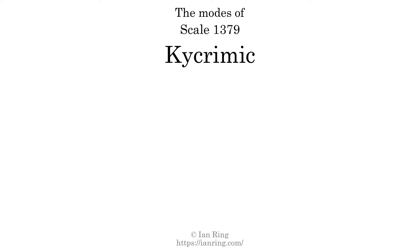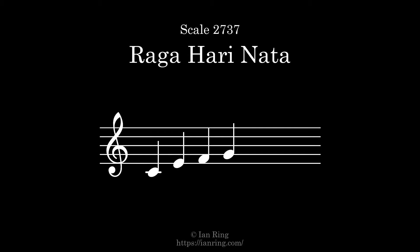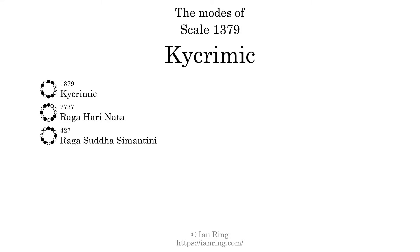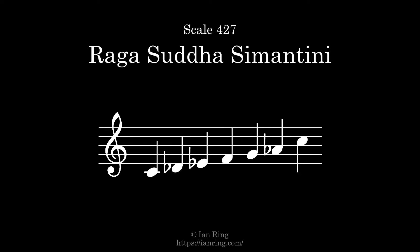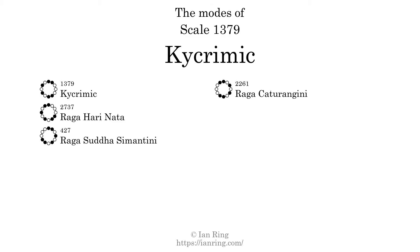This scale has six modes. The first mode is itself. The second mode is scale 2737, also known as Raga Harinata. The third mode is scale 2261, also known as Raga Kacharangani. The fourth mode is scale 2261, also known as Raga Kacharangani.